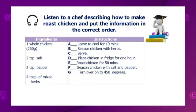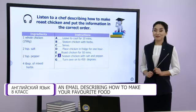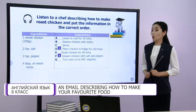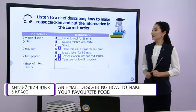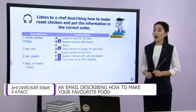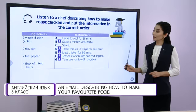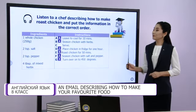Now, let's check your answers together. First, season chicken with salt and pepper. You are right. Number two: place chicken in fridge for one hour. Brilliant. Number three: turn oven on to 450 degrees. Number four: season chicken with herbs. Number five: roast chicken for 50 minutes. And number six: leave to cool for 10 minutes and serve.